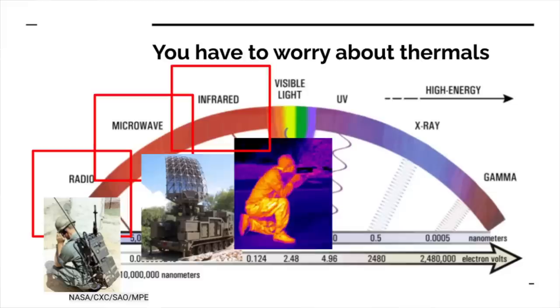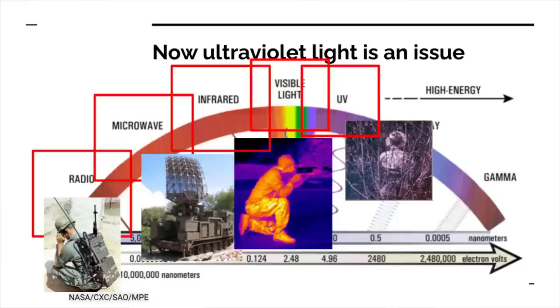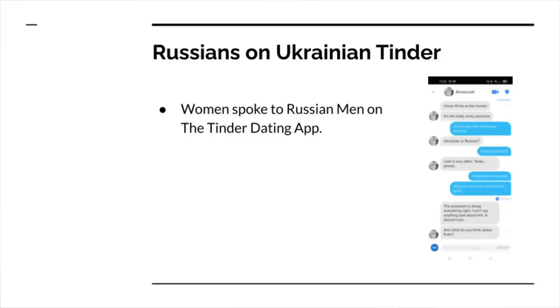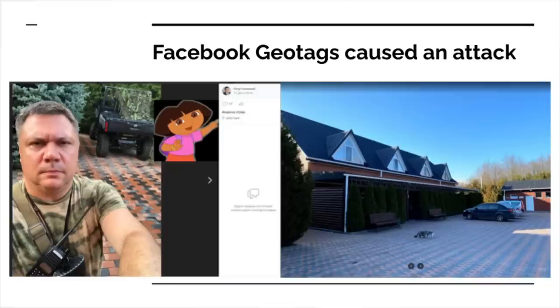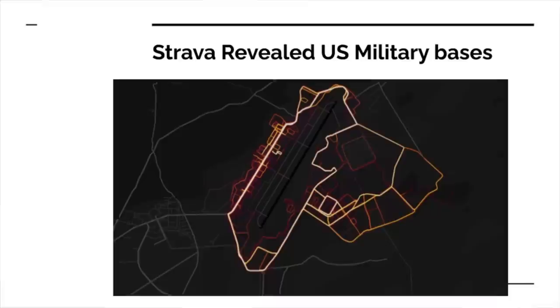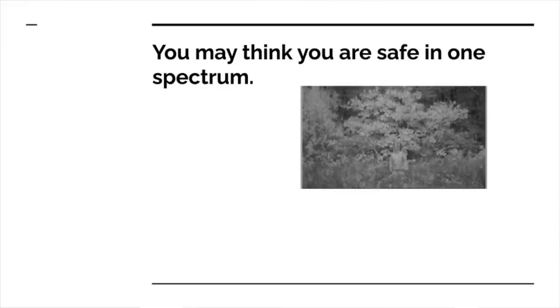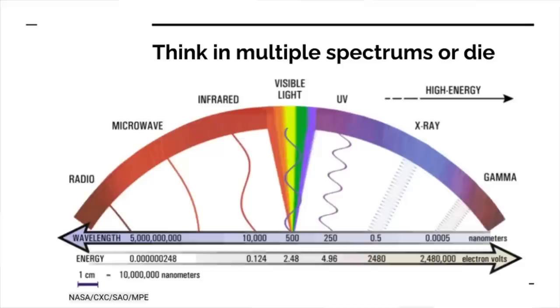We still have to worry about visible light, but ultraviolet sensors are coming into the market as well. You also need to be thinking of the cyber spectrum. As Russia was preparing for the invasion of Ukraine, Ukrainian women were flirting with Russian men on Tinder trying to find out news about the invasion. A soldier got his command post blown up after posting geotagged pictures on Facebook, and US military bases were outlined from soldiers running with their fitness watches synced to Strava — you run the road lining the perimeter. It takes a lot of discipline to maintain security in the cyber realm since everything is online, so always think in multiple spectrums or you will die.